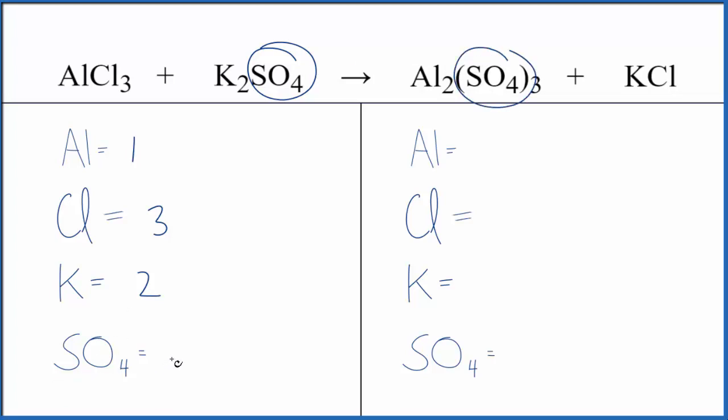This will make the balancing a lot quicker and easier. You'll get the same answer either way. In the reactants, we have one sulfate ion. In the products, we have two aluminums, one chlorine, one potassium, and the sulfates—one sulfate times three, so three of those. This makes it a lot neater and quicker.